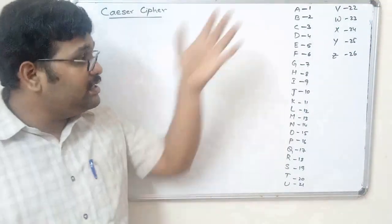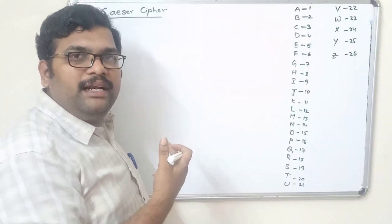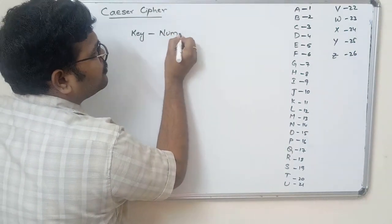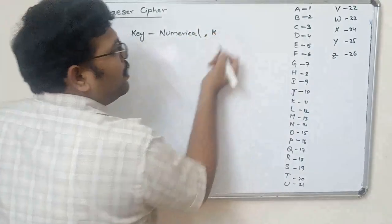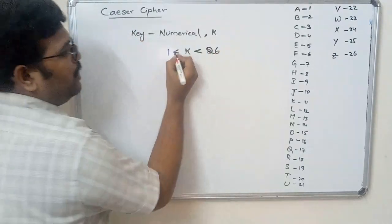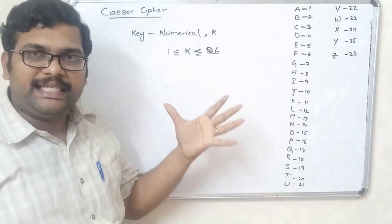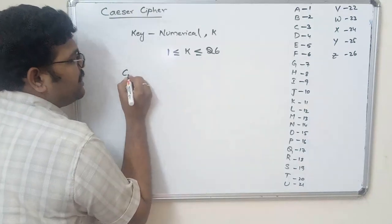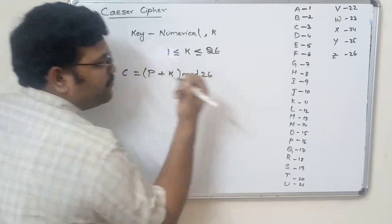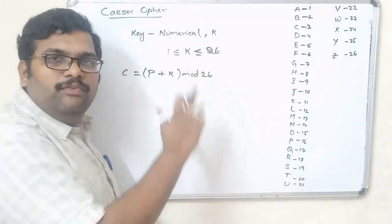Now, in order to find the ciphertext we use one key. Since it is symmetric encryption, the same key is used in decryption as well. The key is a numerical value where 1 ≤ k ≤ 26. The formula to find the ciphertext character is: Ciphertext = (Plaintext + Key) mod 26. We apply this formula to each plaintext character to get the corresponding ciphertext character.